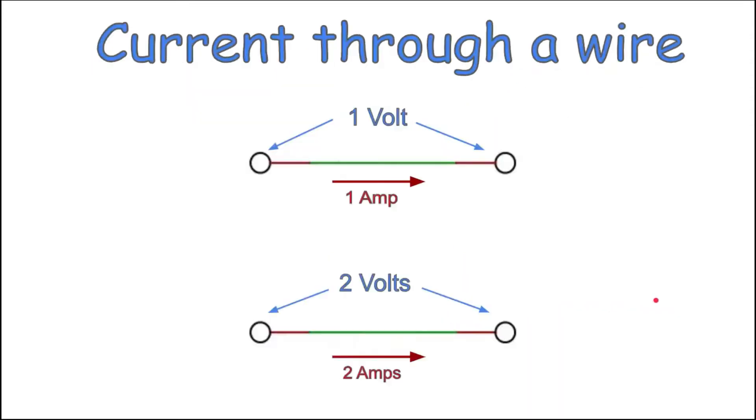As it turns out, voltage and current are proportional. If you have a voltage difference of one volt across the wire and one amp of current flowing through it, if you increase that voltage to two volts, you'll have two amps flowing through that wire.